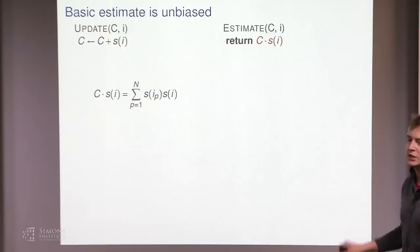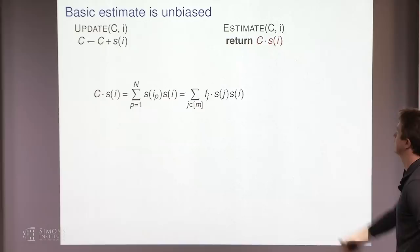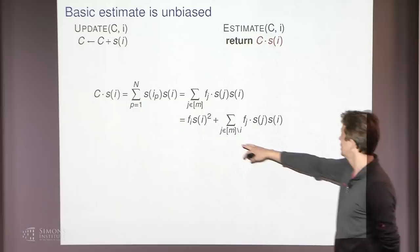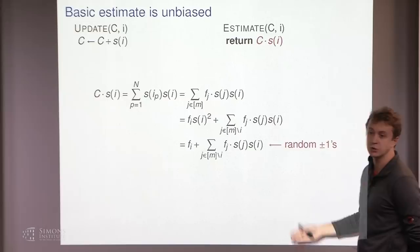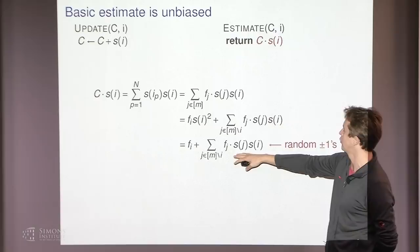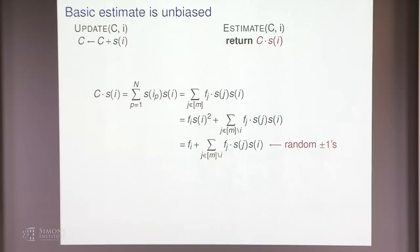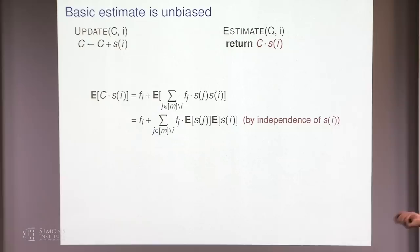This estimator is unbiased. The estimator computes the dot product of the frequency vector with random signs, so multiplying by the sign of element i gives a sum where the contribution of the i-th element has signs that square to one. The noise term from other elements is a sum of fj times random signs, which are independent and plus-minus one, so in expectation the noise term is zero. Taking expectations of both sides confirms the estimator is unbiased.